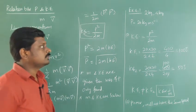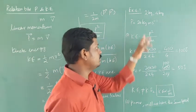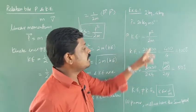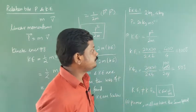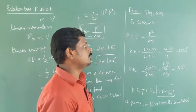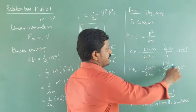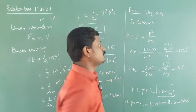Just substitute: P is 20 into 20, then the mass is 2 kg, so 2 into 2. So 20 into 20 is 400, 2 into 2 is 4. Four cancel, you will get 100. So 100 joules, that is the kinetic energy of the first particle.